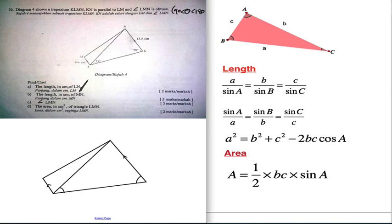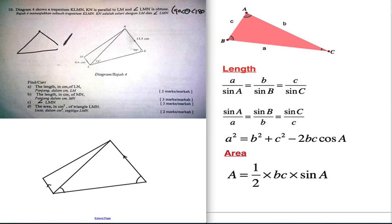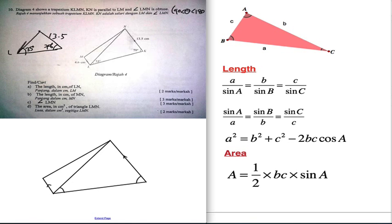The first question asks us to find the length LN. Finding length LN is quite simple. In this triangle, you have 13.5, 35 degrees, and 78 degrees. When you have one angle and one opposite length, you know you have to use the sine rule to find the length LN.